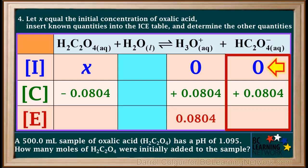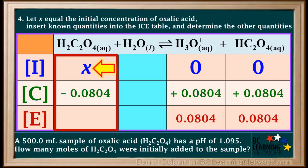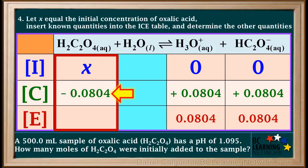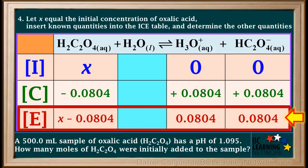Because the coefficients on oxalic acid and hydronium are both 1, the concentration of oxalic acid went down by 0.0804 molar — the same amount that hydronium increased by. Now we can fill in the equilibrium concentrations row. The hydrogen oxalate ion started at zero and increased by 0.0804 molar, so its equilibrium concentration is 0.0804 molar. Oxalic acid started at X molar and went down by 0.0804 molar, so its equilibrium concentration is X minus 0.0804 molar.